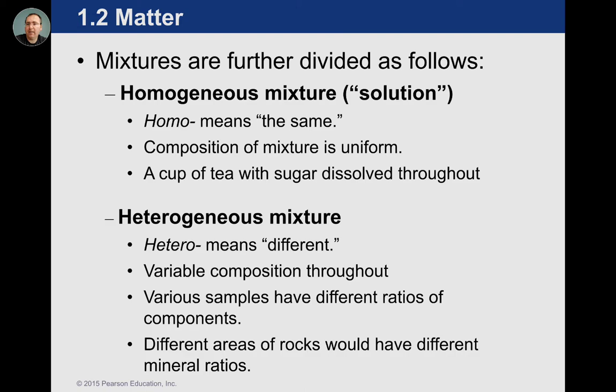There could be something floating on top, or something that sank to the bottom of what we thought was a solution. If there's something different about it — like something that sank to the bottom, or something floating on top like ice, or something suspended in the middle like CO2 bubbles in soda — those are kinds of things that would make heterogeneous mixtures.